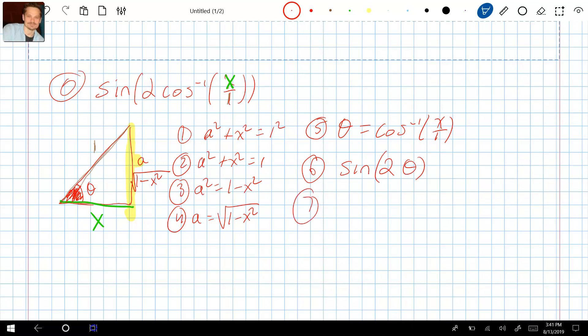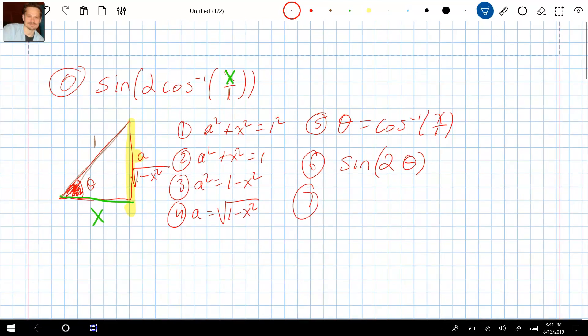From here I'm going to apply a basic trig identity that says that sine of 2 theta is 2 sine theta cosine theta. And now we can make use of our triangle to replace sine theta and cosine theta. Remember the goal is we write in terms of x, so no sines or cosines or angles.